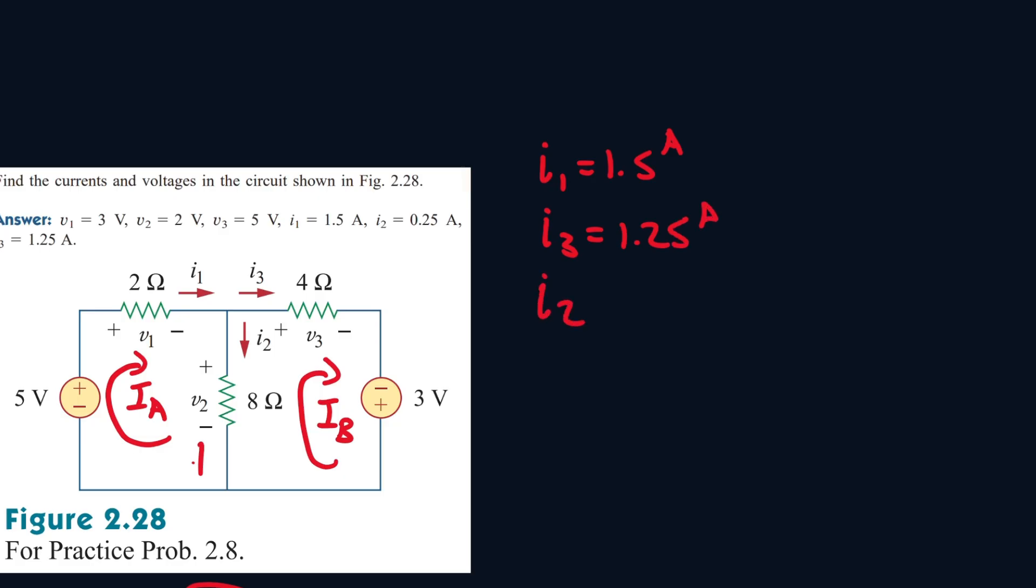And I2, it's between IA and IB, so it will be the difference of IA and IB. And since IA is 1.5 and IB is 1.25, the answer will be 0.25.